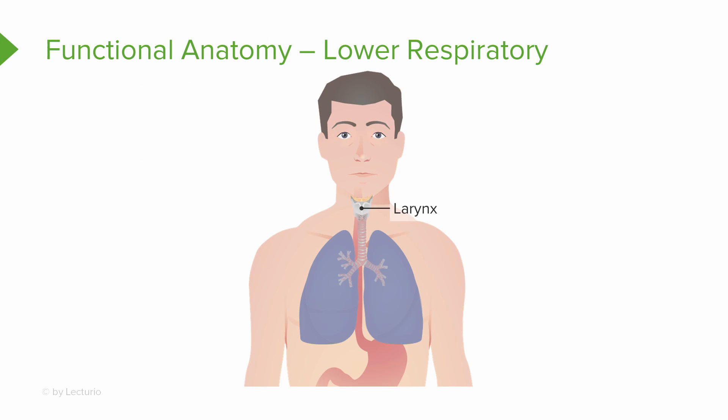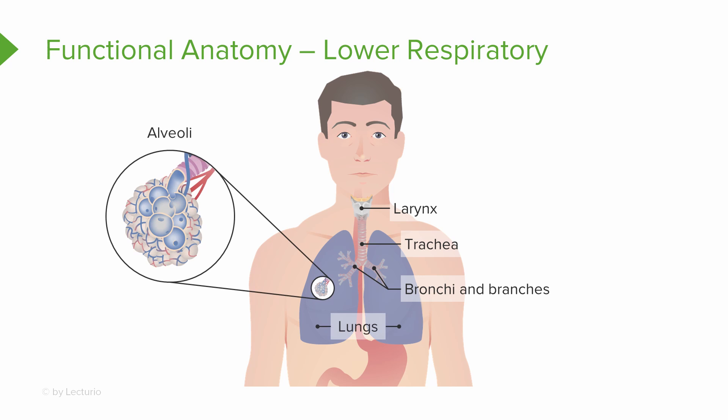Now let's move to the lower respiratory tract. The lower respiratory tract has four main components: we have the larynx, the trachea, the bronchi and branches, and the lungs and the alveoli.